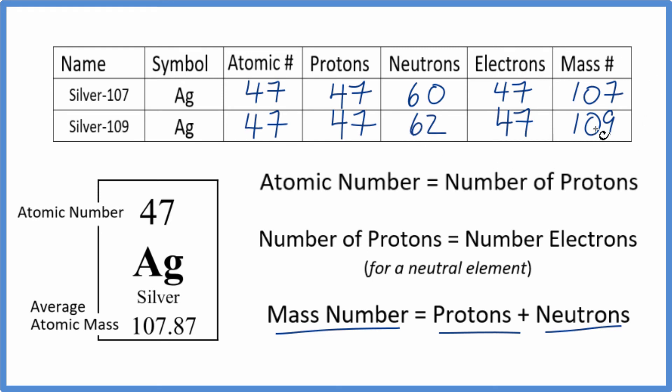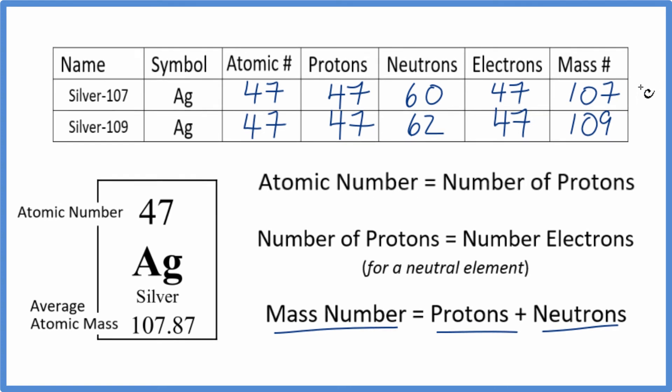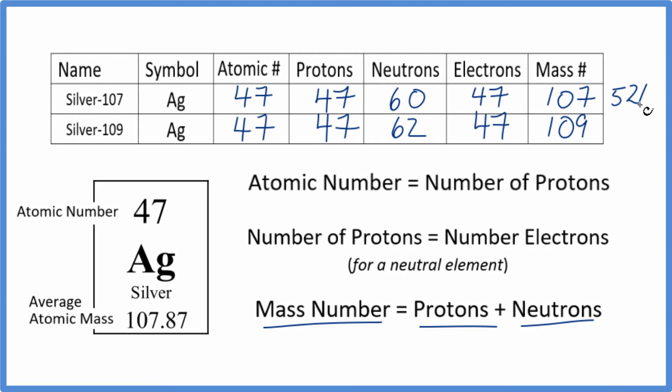When we look at these mass numbers, if you looked at a sample, a block of silver, about 52% of the atoms would have a mass number of 107. About 48% would be a mass number of 109. So when you average this together, that's why you end up with 107.87. It's a weighted average of these different isotopes of silver.